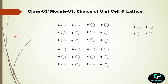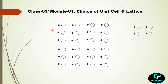Now let's concentrate on this structure or pattern and find the correct unit cell. First we need to identify the motif. Here the motif is one black dot and one open circle — this pair is repeating and creating the entire structure. So the motif is one black dot and one open circle.